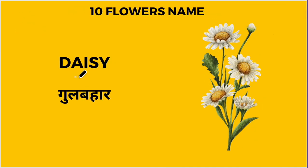Fourth, what is this? This is daisy. D-A-I-S-Y. Daisy meaning gulbahar. Gulbahar ka phool.